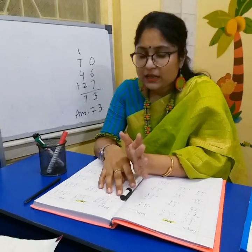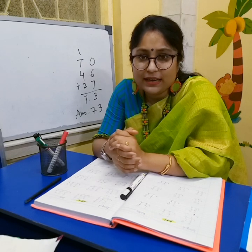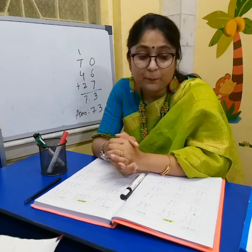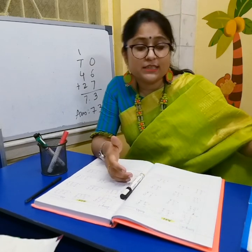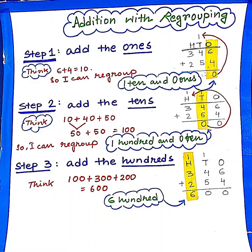Now this is the revision — you have already done 2-digit addition. Today we will learn 3-digit addition. See this chart. Step 1: add the ones, as we have done here. Then you have to add the tens column. And then you have to add the hundreds column.